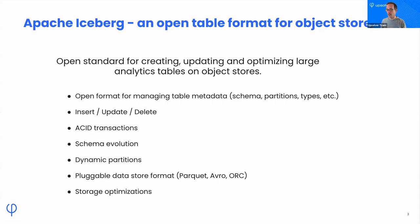Insert, update, and delete is a big one — you can update, insert, and delete data or query data within a transaction. We'll talk about concurrency controls and snapshot isolation. Schema evolution is also very easy because you're updating the table format itself: adding a column, removing a column, renaming or rearranging a column. All of this is handled for you within the manifest.